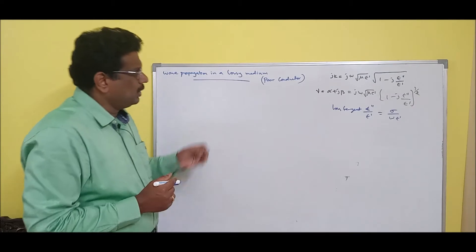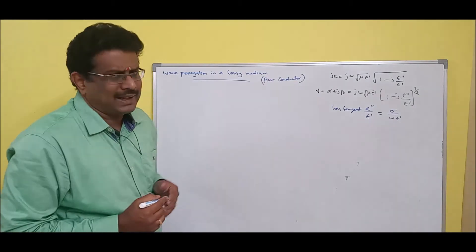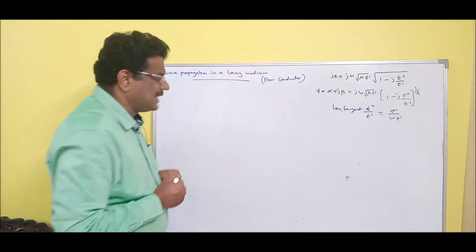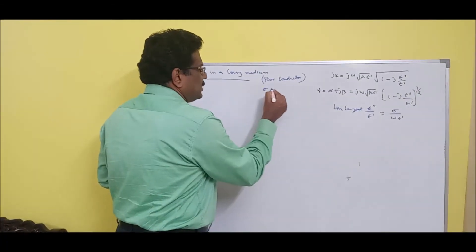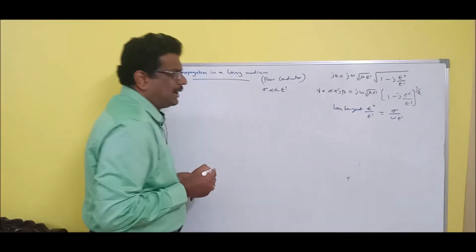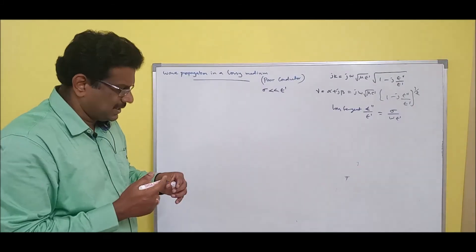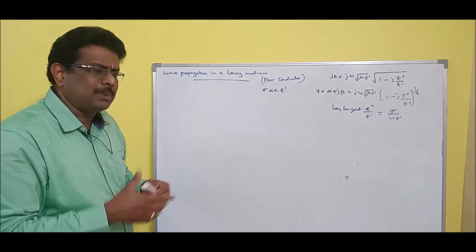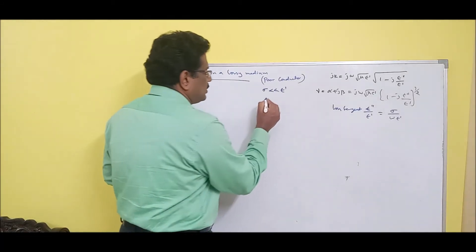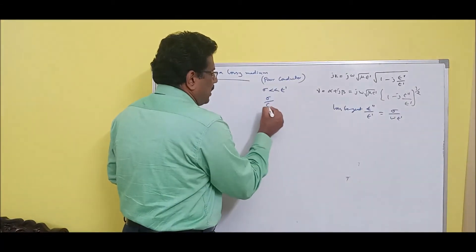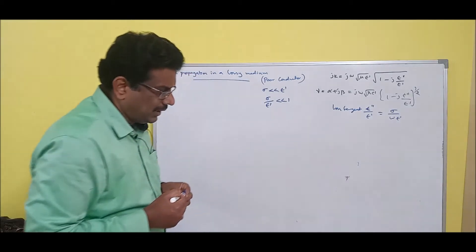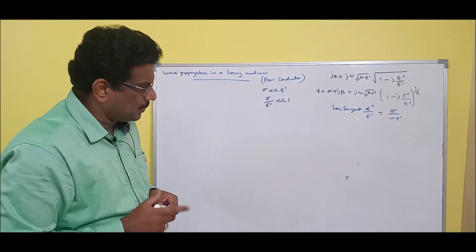Now since we told it is a poor conductor, its conductivity is very less. That is the actual meaning. Which means sigma is much less than epsilon dash. The conductivity is very less — sigma is very much less when compared to epsilon dash, so sigma divided by epsilon dash is much less than one.